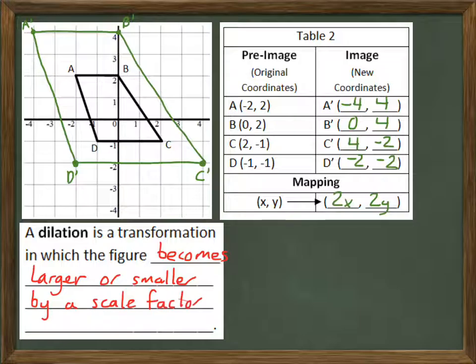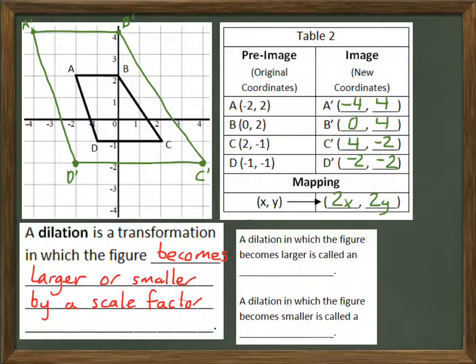So a dilation is a transformation in which the figure becomes larger or smaller by a scale factor. In that sense, they're similar figures, just like we talked about earlier. So obviously this one got bigger.